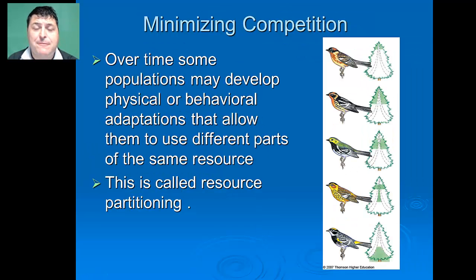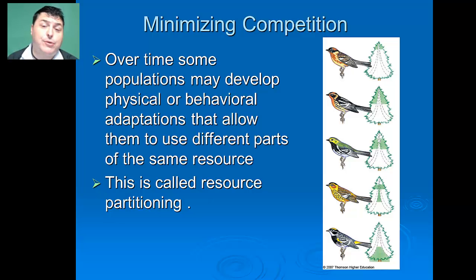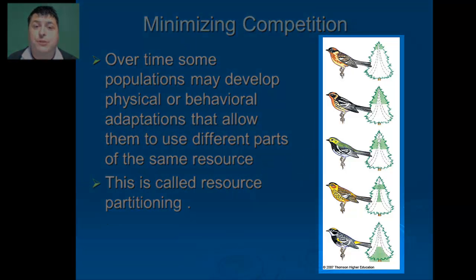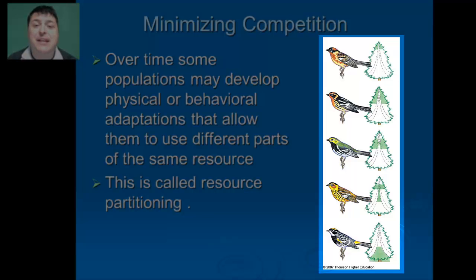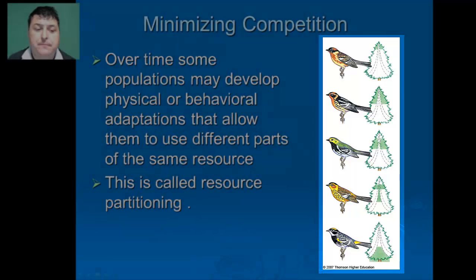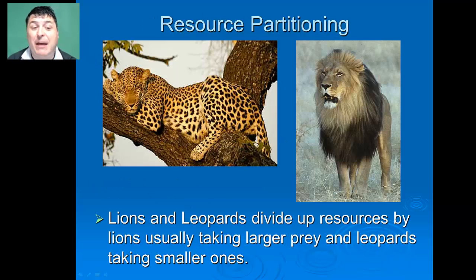Over time, long enough to allow for natural selection to take place, populations of various species may have developed physical or behavioral adaptations that allow them to use different parts of the same resource. This is called resource partitioning. Certain warblers do this by spending at least half of their feeding time in a distinct portion of the spruce tree and by consuming somewhat different insect species. Lions and leopards are able to divide up resources by the fact that lions usually take larger prey and leopards would take smaller prey.